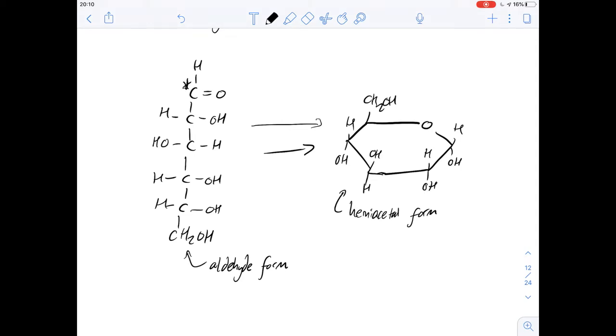We can see that the first carbon atom, which would be this one here, ends up over here and the sixth one, which is this bottom one, ends up up here. So it ends up just sort of curling around from this straight line up like this and then you end up with this oxygen connecting the two.